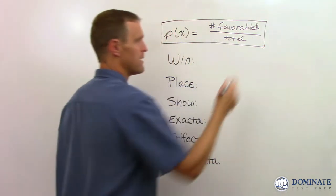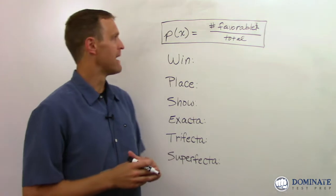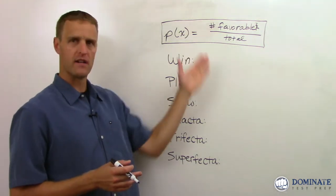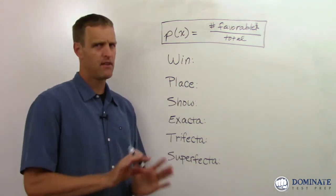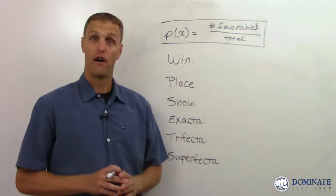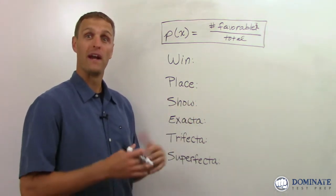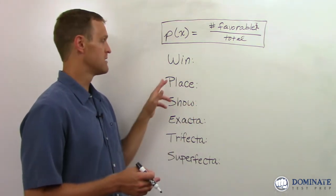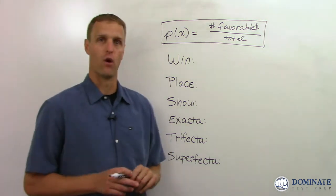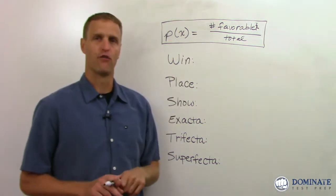There are other rules of probability that I certainly teach in my lessons, but that's really all we're going to need with a couple of sub-rules to solve the probability of winning your bet if you place a bet to win, to place, to show, and so forth. So favorable outcomes over total outcomes.